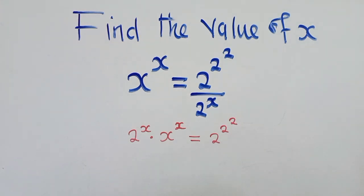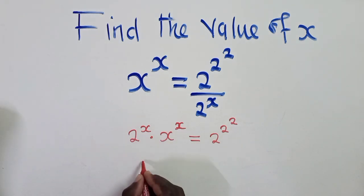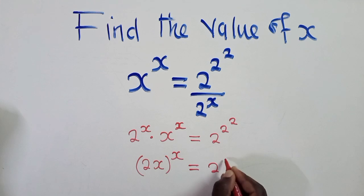So now from this stage, if you can see, applying the laws of indices here, we shall have 2x power x here, which is equal to 2 power 2 power 2.